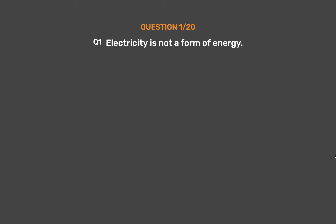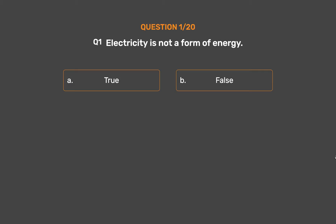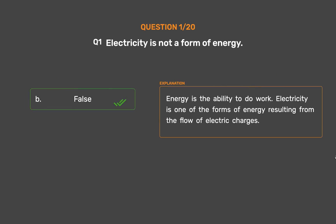Question number 1. Electricity is not a form of energy. Option A: True. Option B: False. The correct answer is Option B, False. Energy is the ability to do work. Electricity is one of the forms of energy resulting from the flow of electric charges.